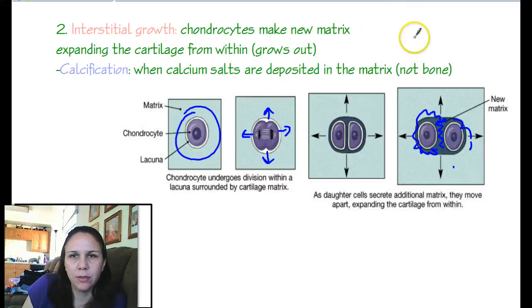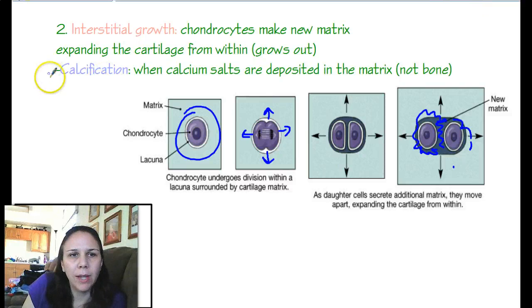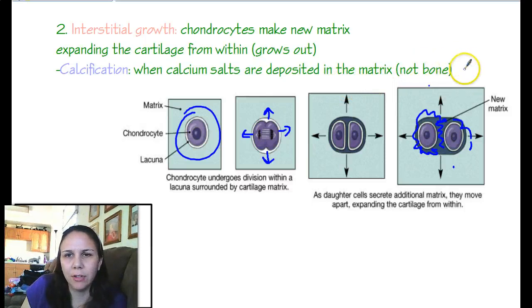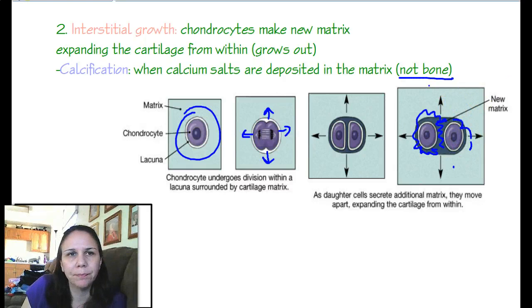So appositional is outside in, interstitial is inside out, and they both occur at the same time to make your bones grow. Then the process of calcification occurs, where calcium salts are deposited in the matrix, making it tougher. After a while they become bones — it's not bone right away, it's calcified cartilage first, but it eventually turns into bone.